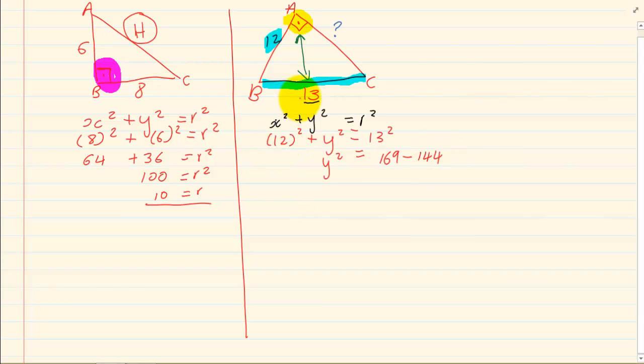12 squared is 144. We are taking it over. 13 squared is equal to 169. So we have y squared is equal to 25. y is equal to 5.